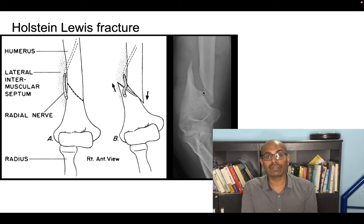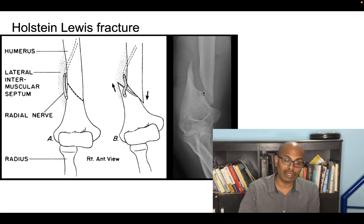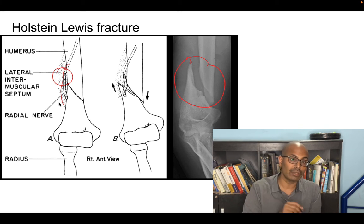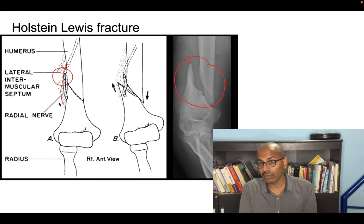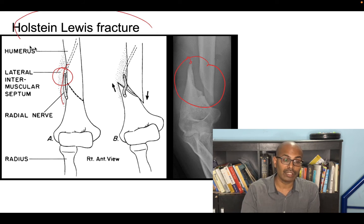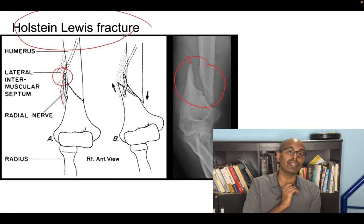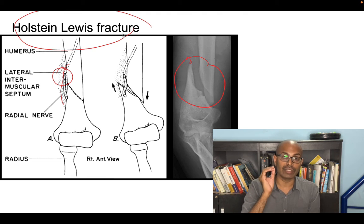Holstein-Lewis fracture is a spiral oblique fracture at the junction of the middle and lower thirds of the humerus. Because of this fracture, the spike presses into the radial nerve as it passes from posterior to anterior, piercing the lateral intermuscular septum. The radial nerve gets caught there, causing radial nerve palsy — this is called a Holstein-Lewis fracture of the humerus.